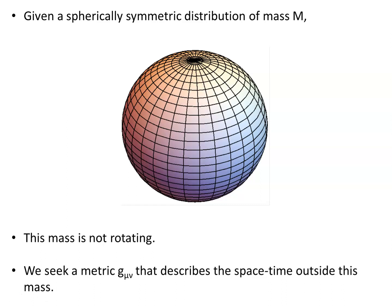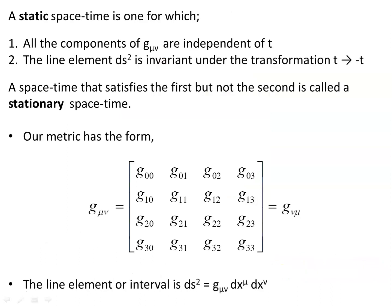Given a spherically symmetric distribution of mass M, where the mass is not rotating, we seek a metric G_μν that describes the spacetime outside this mass. A static spacetime is one for which all the components of G_μν are independent of t — they don't depend on time — and the line element ds² is invariant under the time transformation t to minus t. So under time reversal it doesn't change; it's invariant.